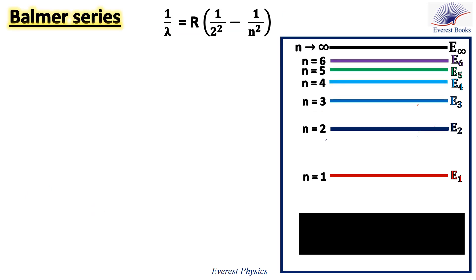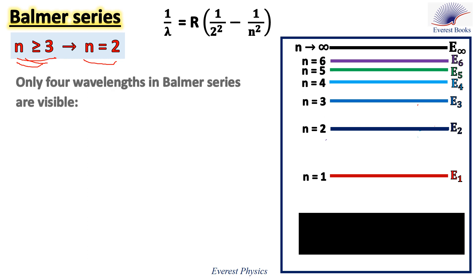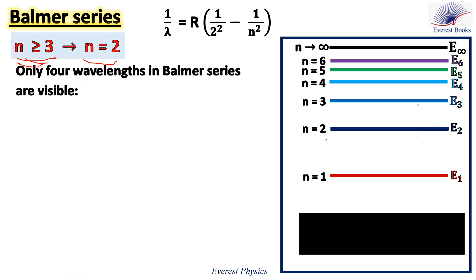Now we are going to discuss some spectral series of the hydrogen atom. We will start with the Balmer series because it is the only series which includes visible photons. The Balmer series is characterized by downward transitions from higher energy levels to the N = 2 energy level, where N refers to the principal quantum number. Only four wavelengths in the Balmer series are visible. Let's start with line alpha, which corresponds to the downward transition from the N = 3 energy level to the N = 2 energy level.